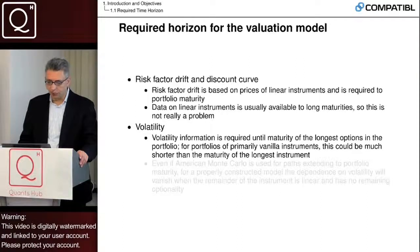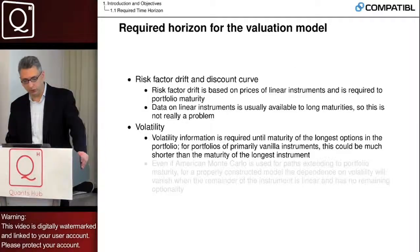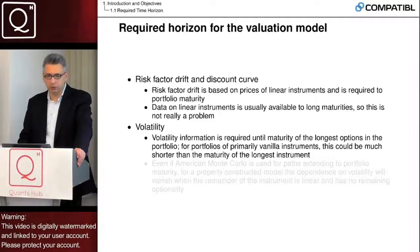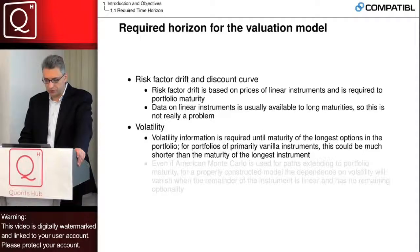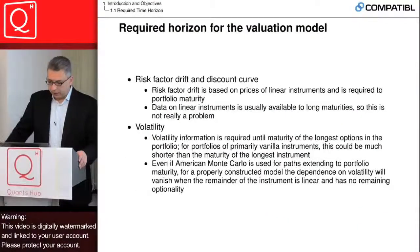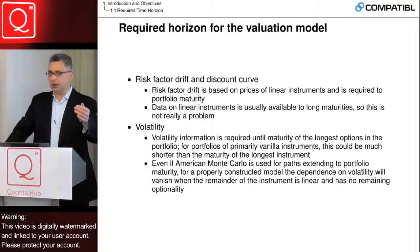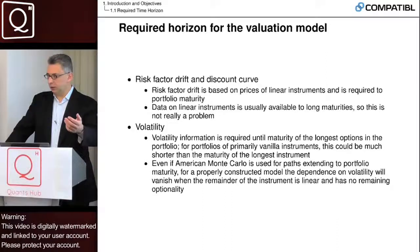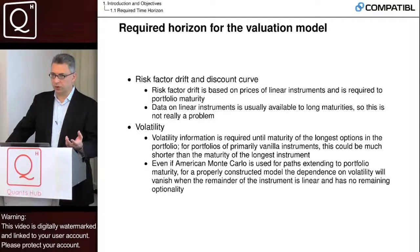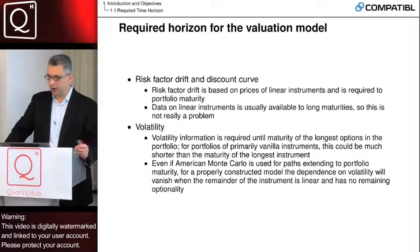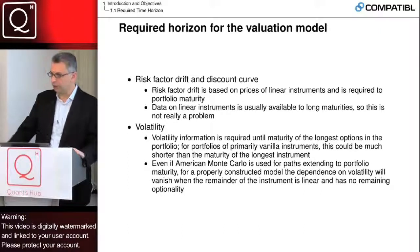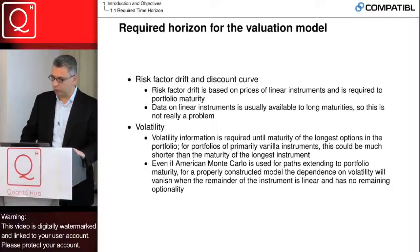Volatility is only needed for the valuation model until the maturity of the longest option in the portfolio. For portfolios of primarily vanilla instruments, this could be much shorter than the maturity of the longest instrument — for example, for a portfolio of FX options, most are a few years in maturity, normally up to ten years or so. If American Monte Carlo is used, even for paths extending to portfolio maturity, for a properly constructed model the dependence on volatility will vanish. If the model satisfies the martingale property and American Monte Carlo works correctly, you will see there is no dependence on volatility, because American Monte Carlo is just a numerical method to obtain the same price you would otherwise obtain with any other method.